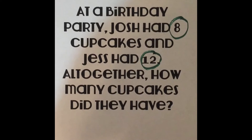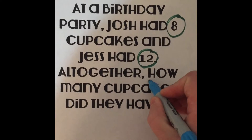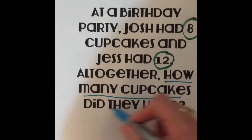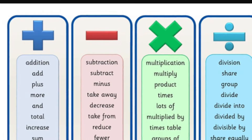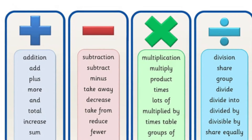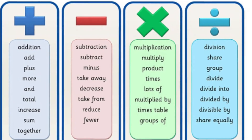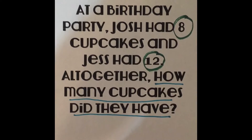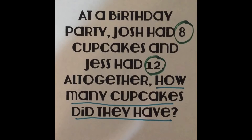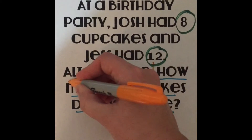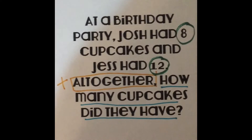Our next step is to underline the question, so I know my question is: how many cupcakes did they have? Next we have the B, which means box any action words. In math, we know that 'all together' means to add, so I'm going to write an addition sign right there.